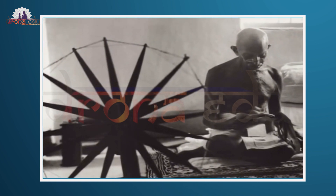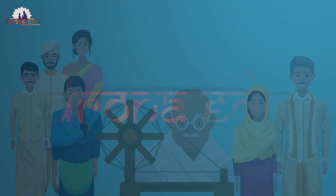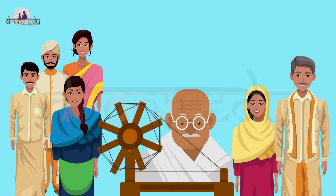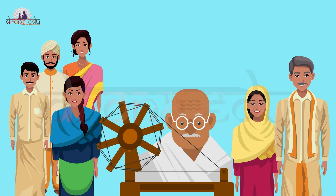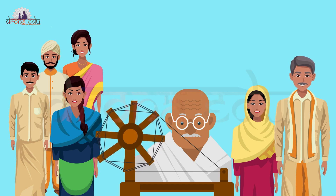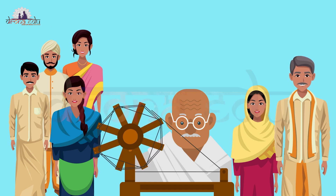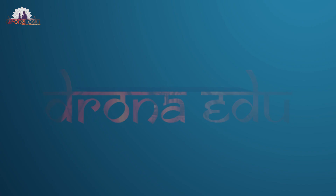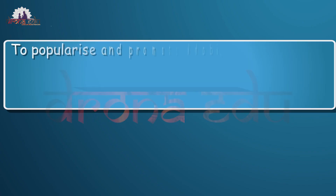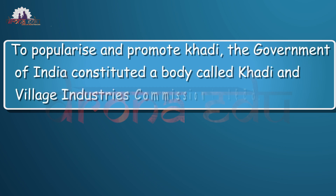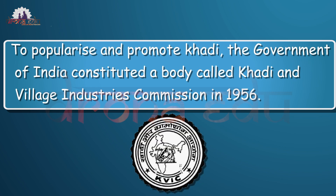Another hand-operated device used for spinning is the charkha. Use of the charkha was popularized by Mahatma Gandhi as part of the independence movement. He encouraged people to wear clothes made of homespun yarn, termed as khadi, and shun imported cloth made in the mills of Britain.